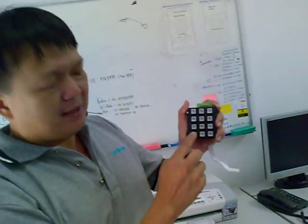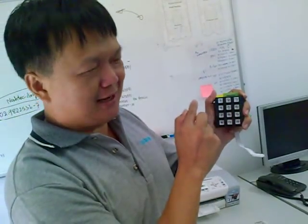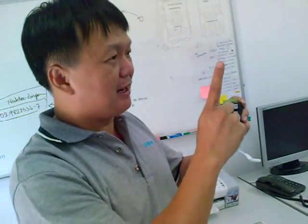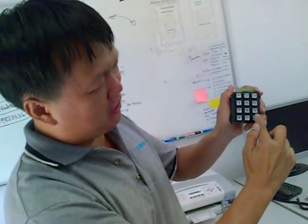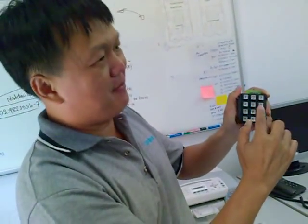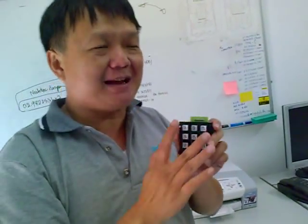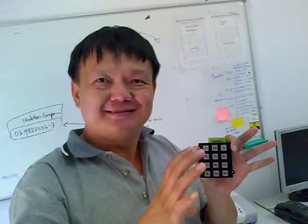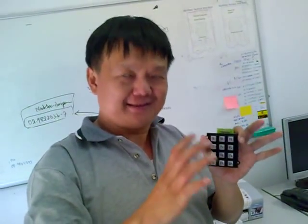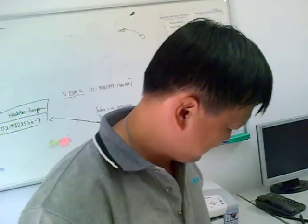If we want to change shifts, star one would mean the first shift coming in, and that would be the first shift coming out. This will make the programming much simpler and easier.